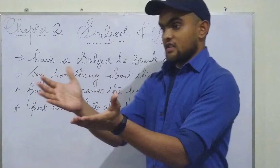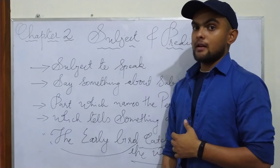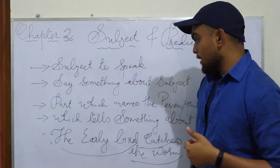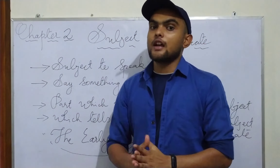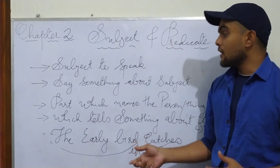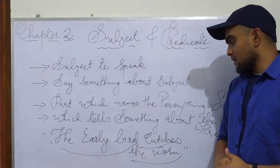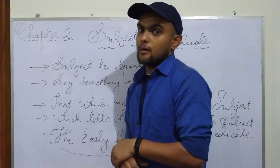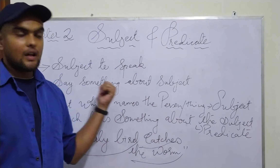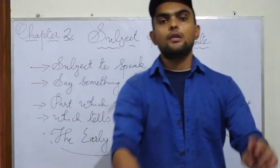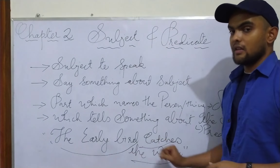You will be more clear when we see an example — by an example things will be easier. Here is the example: 'The early bird catches the worm.' The part which names — everything under the sky has a name — the name here is 'the early bird.' That is the subject. The part which tells something about the subject — what the subject does — is 'catches the worm.' That is the predicate. So we divided the sentence into two: 'early bird' is the subject, 'catches the worm' is the predicate.